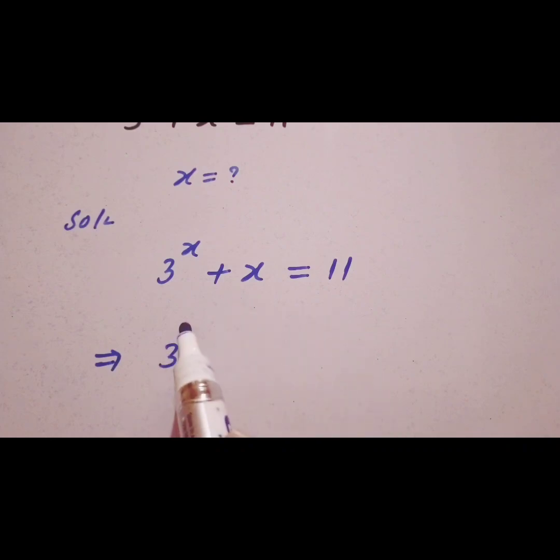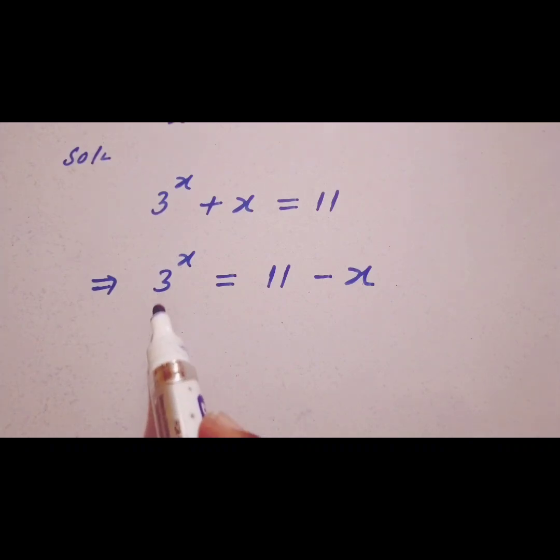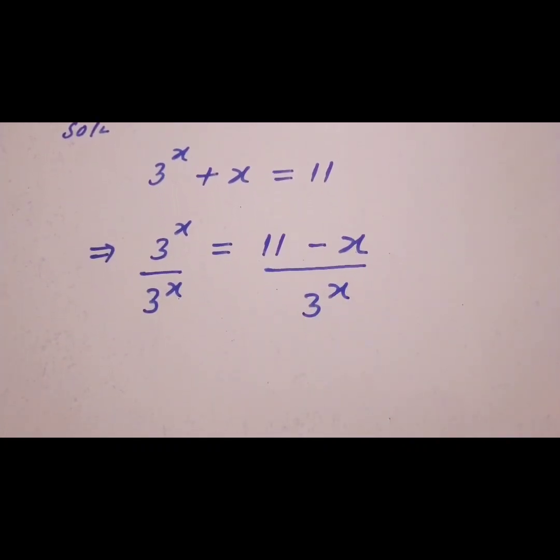3^x is equal to 11, and this will become minus x. So dividing both sides by 3^x, here 3^x cancels with 3^x, and equals to 1.